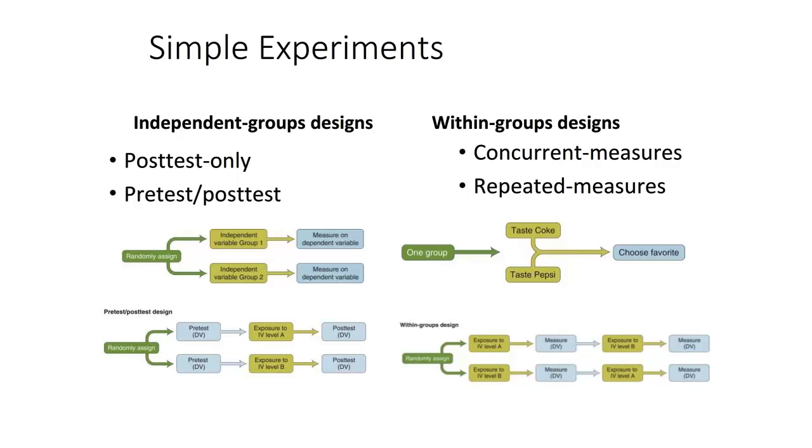So in drug trials and things like that to get around those ethical problems we'll do what's called a within groups design. This means maybe for four months you get assigned to one group and then you'll have a two month off period and then you would switch and be in the other condition for six months. So every individual person would eventually participate in every single part of that study.